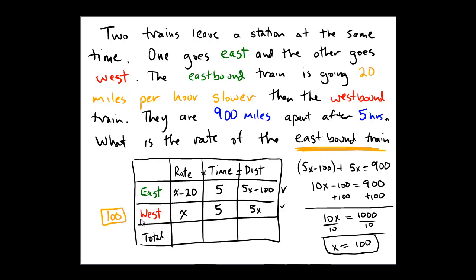The eastbound train's rate is x minus 20. Since x was 100, that's 100 minus 20, which is 80. Therefore, the correct answer to this problem is 80 miles per hour.